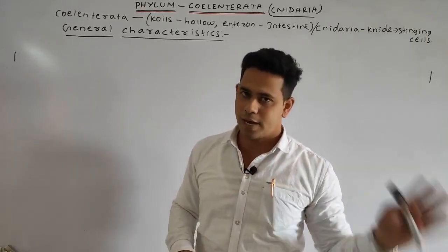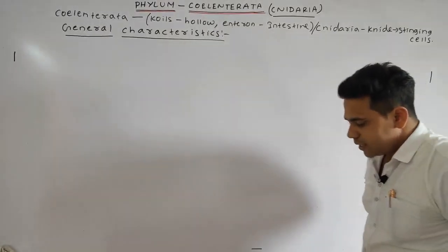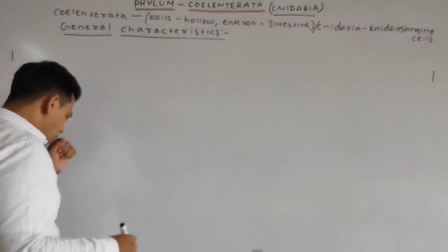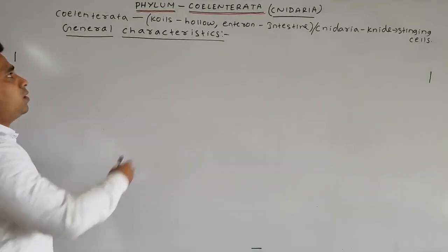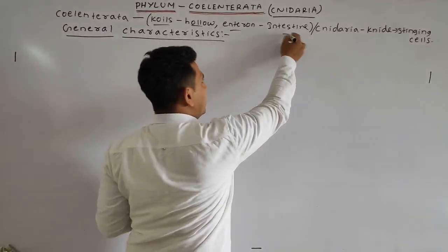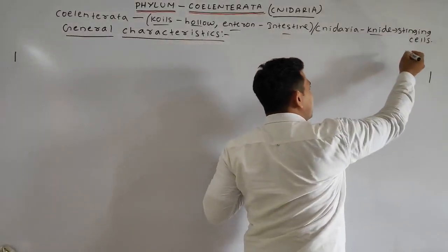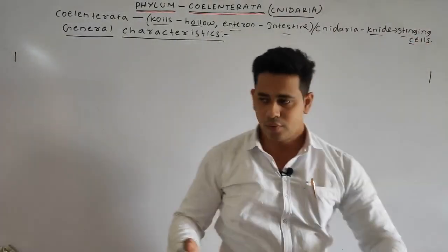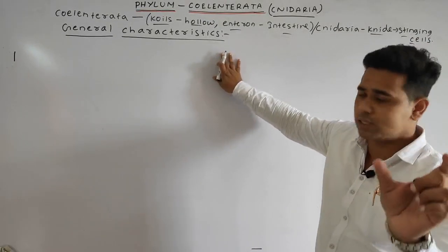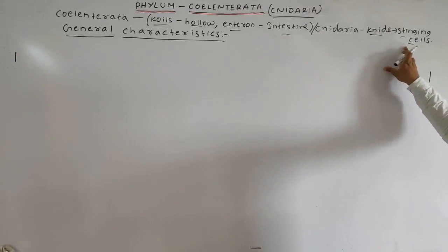In the previous class we discussed Phylum Porifera. Now we are going to discuss Phylum Coelenterata. The term Coelenterata is derived from the word 'coelos' meaning hollow or cavity, and 'enteron' meaning intestine. It is also called Cnidaria. The term Cnidaria comes from the word 'cnida' meaning having the stinging cells. We will discuss what those stinging cells are.